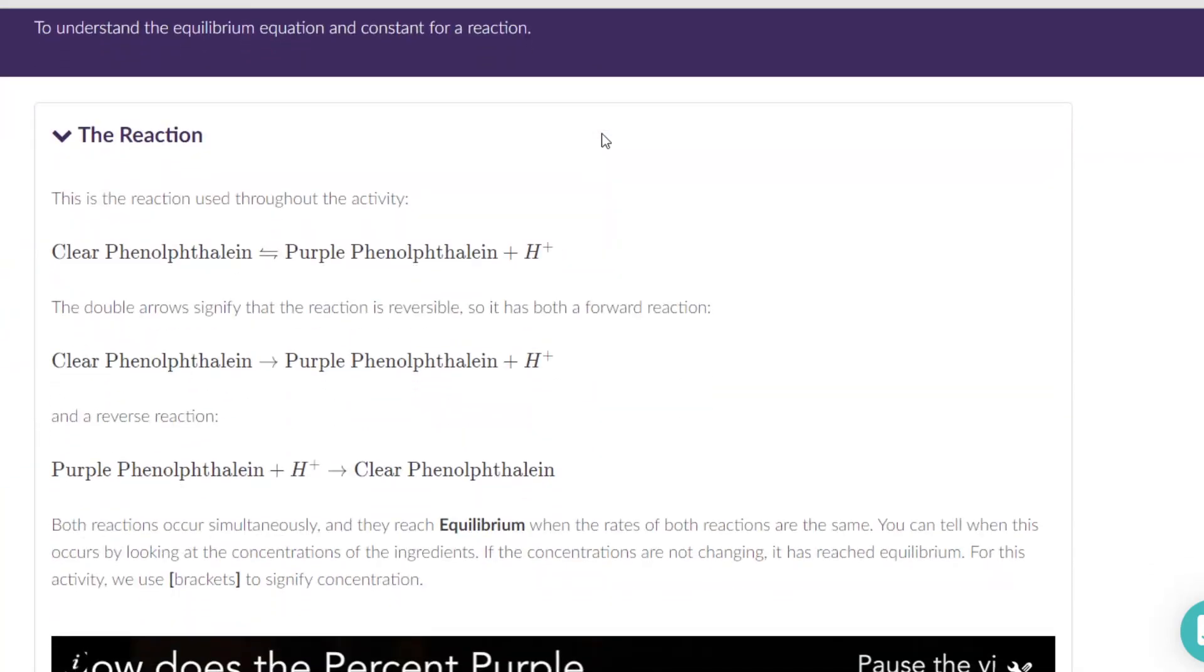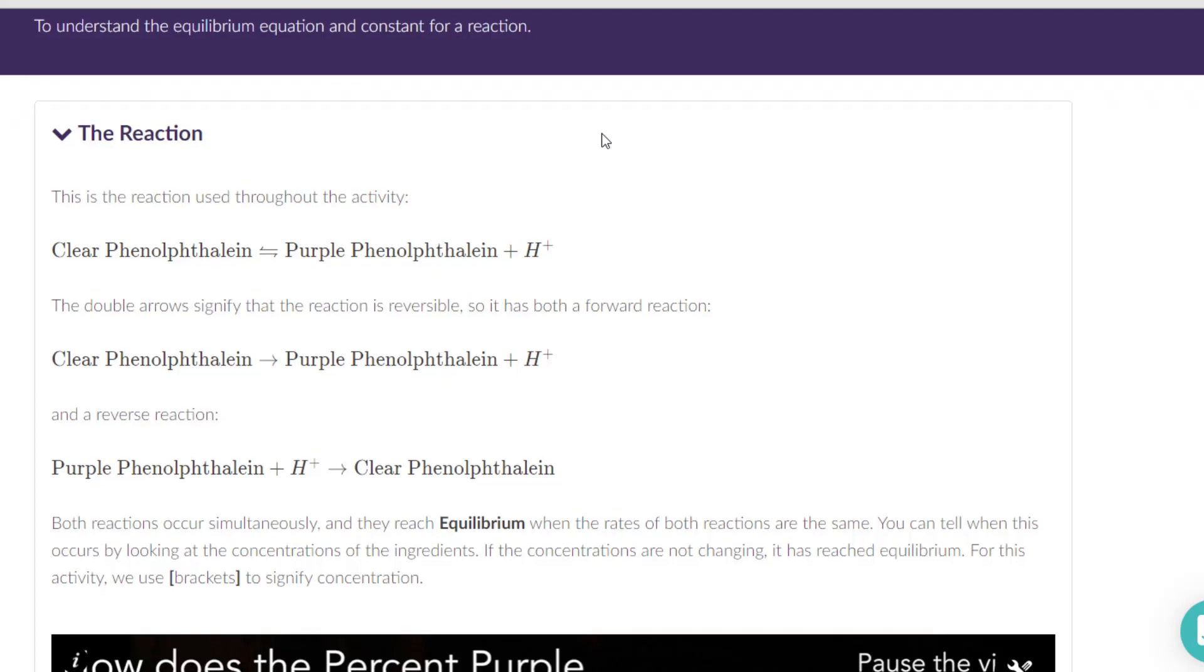This is a very simple reaction. When you take clear phenolphthalein, it'll give off purple phenolphthalein and hydrogen ion. The double arrows indicate that it's reversible. So in an equilibrium state, we will have some clear phenolphthalein, some purple phenolphthalein, and some hydrogen ion.